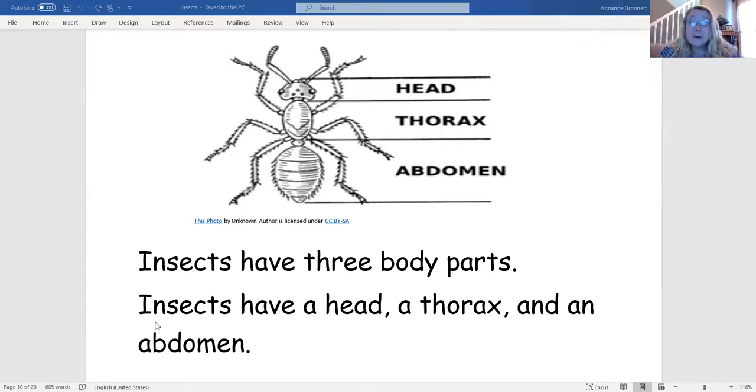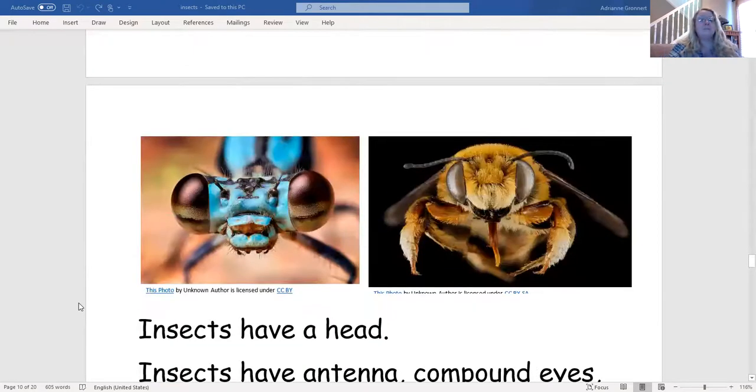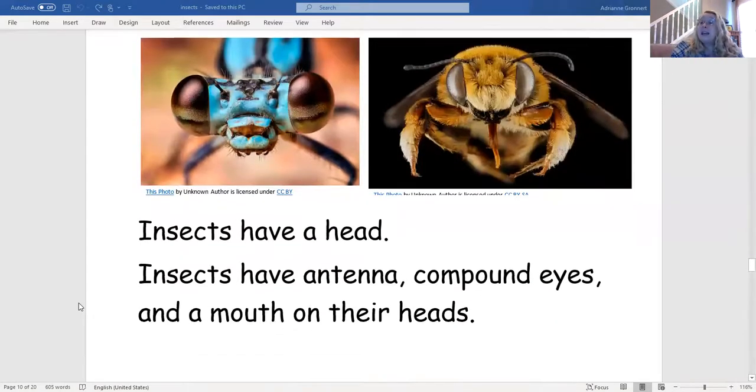Okay, let's see if we can find more text details about what insects have. Insects have a head, insects have antenna, compound eyes, and a mouth on their heads.